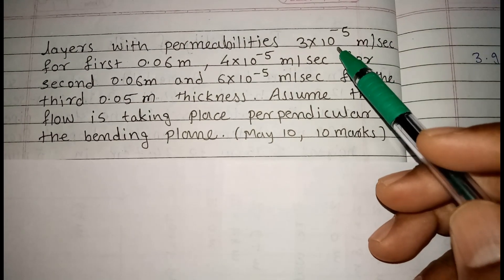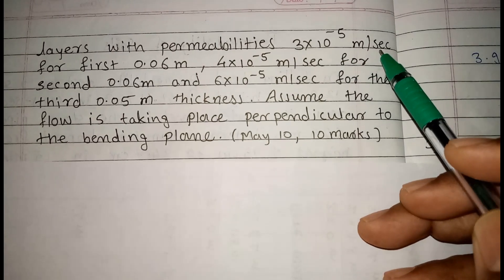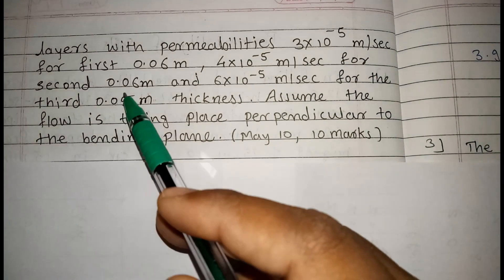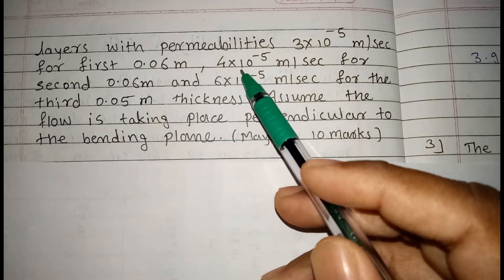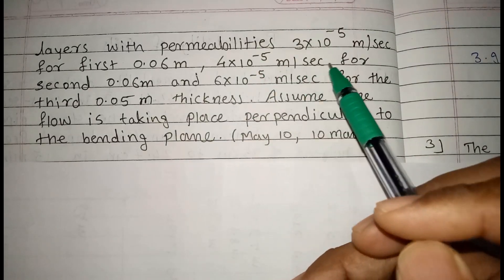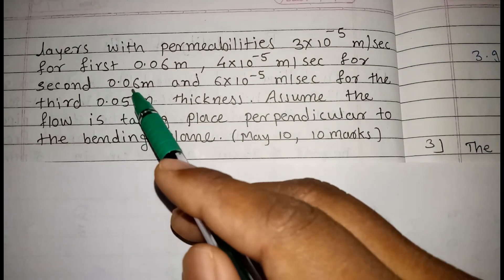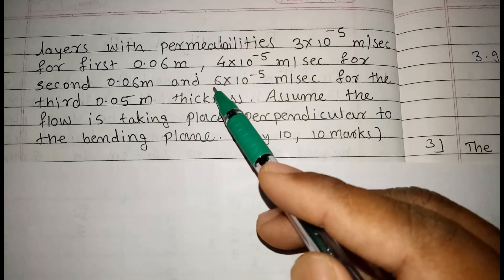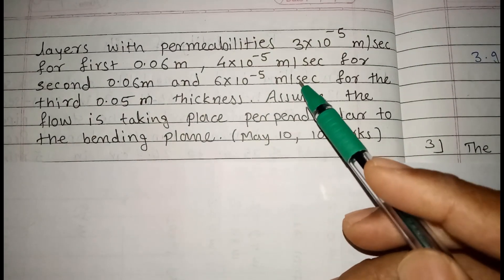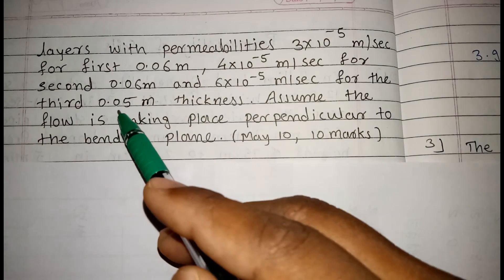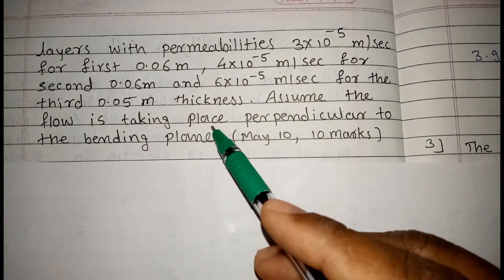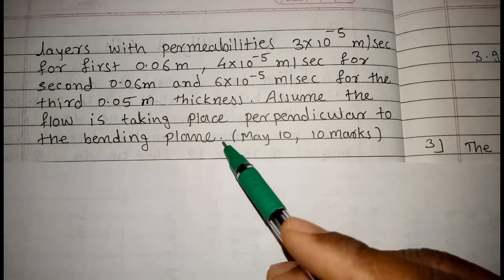3 into 10 raise to minus 5 meter per second for first 0.06 meter, 4 into 10 raise to minus 5 meter per second for second 0.06 meter, and 6 into 10 raise to minus 5 meter per second for third 0.05 meter thickness. Assume the flow is taking place perpendicular to bedding plane.